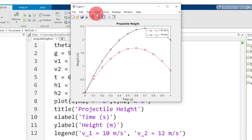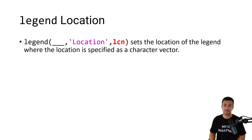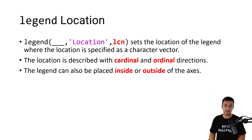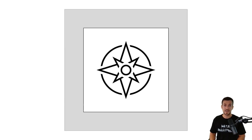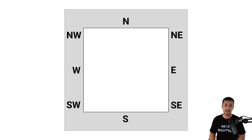Let's take a look at how to format the location of the legend. Here we can see the syntax of the legend function — we've already provided the legend entries, and now we want to specify the location of the legend as a character vector. The legend's location is described with cardinal and ordinal directions, and the legend can be placed inside or outside of the axes.